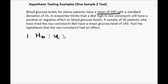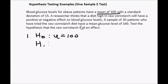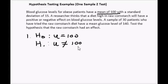The alternate hypothesis is what we are testing. The researcher thinks raw cornstarch has an effect but doesn't know whether it will be higher or lower. So our alternate hypothesis is that the mean μ is not equal to 100 — it could be greater or smaller. All we're interested in finding out is whether there was a difference.